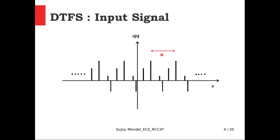Here is one example of a periodic signal in the discrete domain. The discrete sequence shows spikes that repeat — a particular spike appears again and is followed by the same sequence. This repeating interval is called the period interval for discrete-time periodic signals.